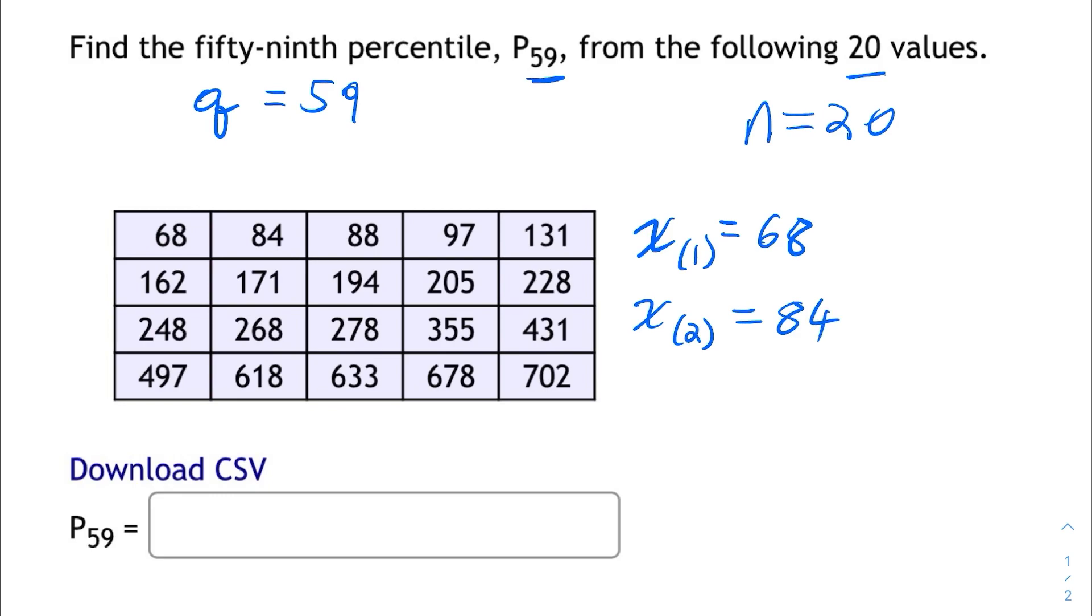You have the next one, the third smallest is 88, and you can take this all the way up to the largest value, which would be the 20th value, which is 702. So these would be called the order statistics, because they're in order of increasing magnitude from smallest to largest. The 20th value is the largest value.